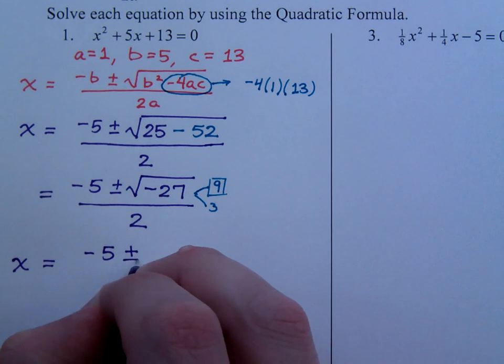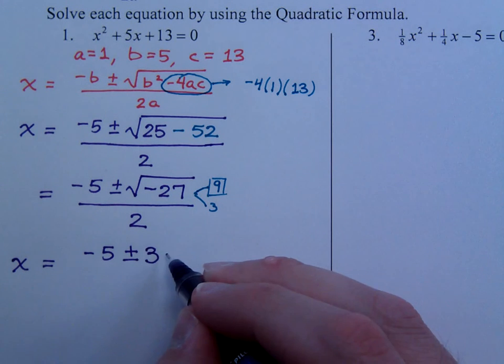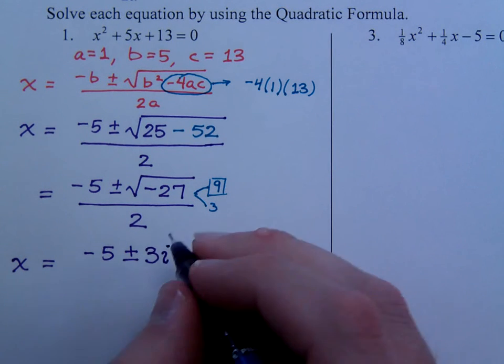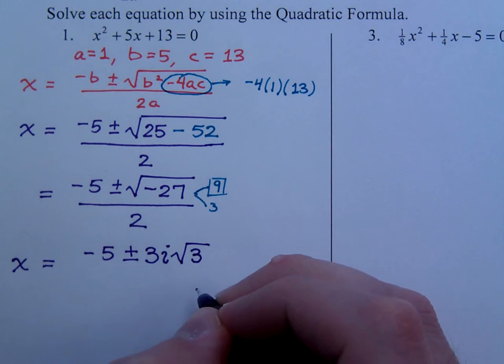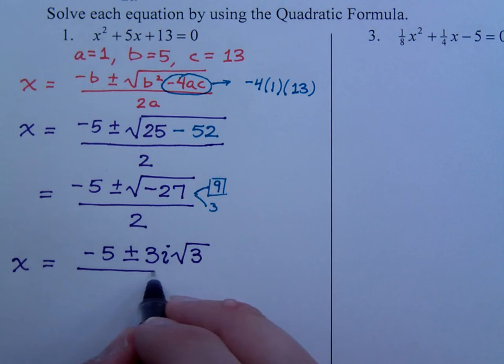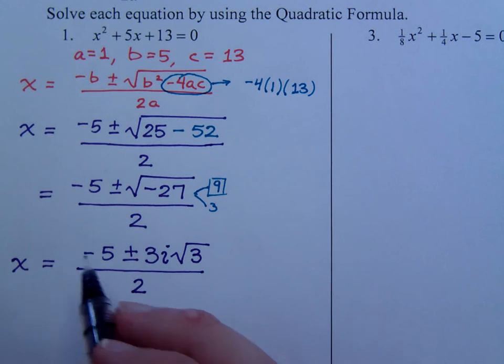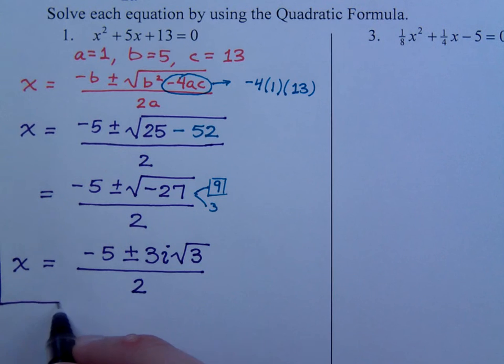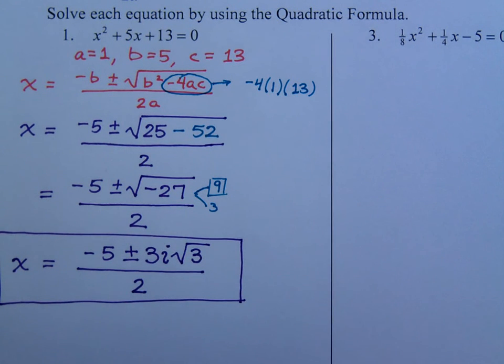We get negative 5 plus or minus, so the square root of 9 is 3. The negative gives you an i, and then there is a factor of 3 that stays on the inside. This 3 stays on the inside here. And this is all over 2. You would try to see if there is some way to simplify all of these, but there's not, they don't have anything in common. You get 2 answers, 2 nasty looking answers, but they are 2 solutions nonetheless.